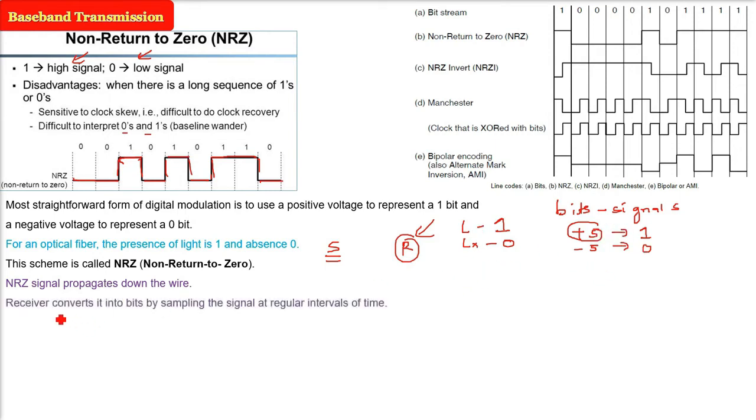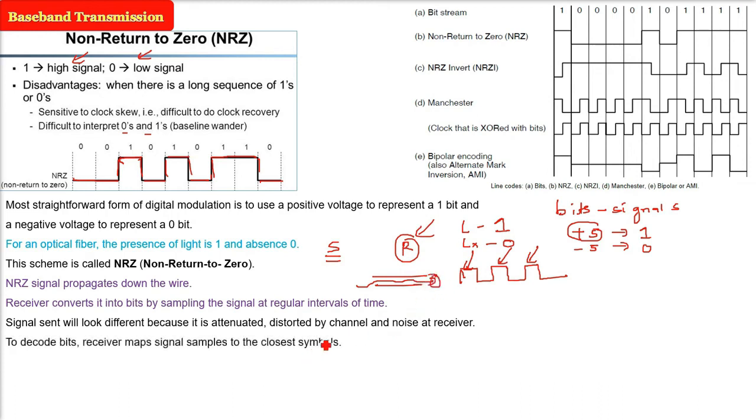So receiver, what it does? It converts this into bits, because it has to sample the signal at regular intervals of time, you can say clock. At every clock pulse, it will try to retrieve through sampling the signal. Whenever you send the signal, signal will look different. Because in between, it will lose energy, it will be attenuated, distorted by the channel.